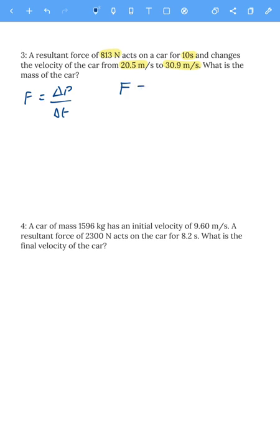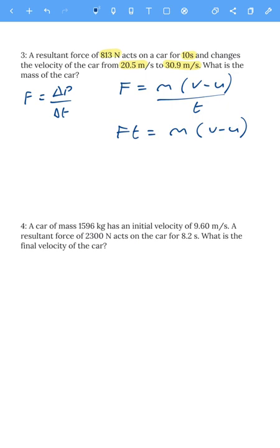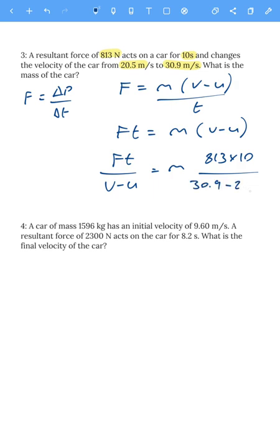We use force equals M times V minus U over time. To find mass, multiply both sides by time: force times time equals mass times V minus U. Then divide by V minus U to isolate mass: mass equals force times time divided by the change in velocity. Putting in the numbers: 813 times 10 divided by 30.9 minus 20.5 gives a mass of 781.7, which rounds to 782 kilograms.